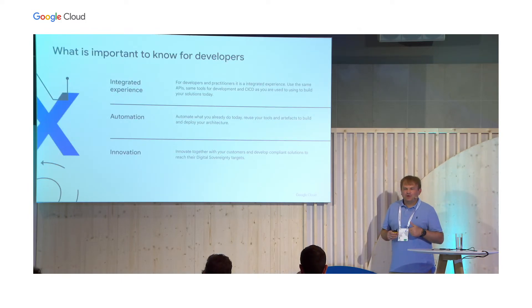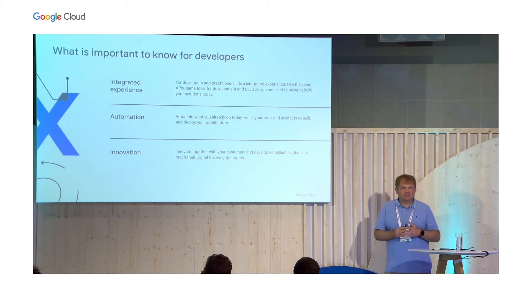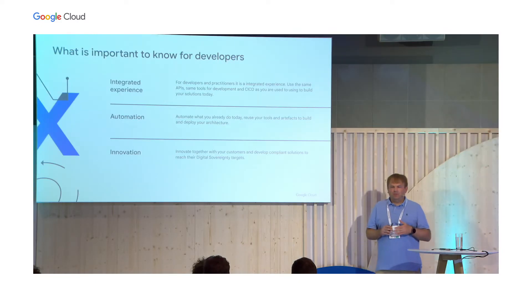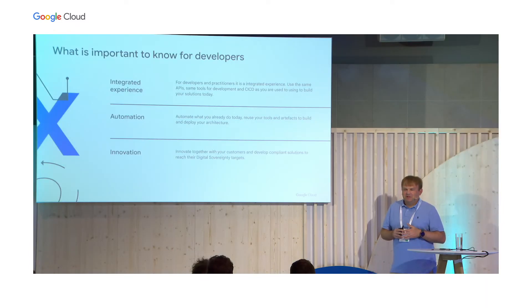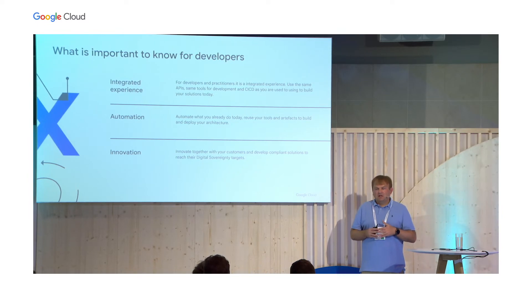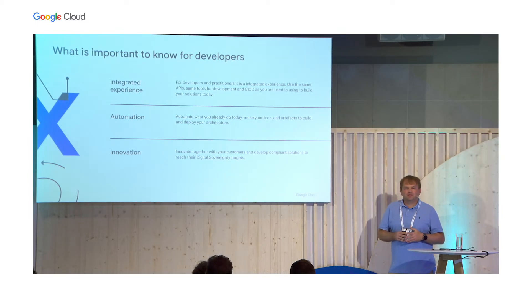First, sovereign controls are not a fork of GCP. They have the same code base and offer the customer an integrated experience. It builds on the public cloud services, and you can use and develop with all the tools you already know. The APIs are not changed, and for automation, you can deploy the whole infrastructure with Terraform or similar tools — if you have existing scripts today, you can just reuse them. Sovereign controls and our sovereign cloud efforts give you as a developer the basis to create compliant solutions depending on the customer's needs, using services you already know.